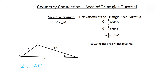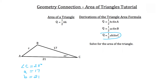And side length B has a measure of 21 units. So which derivation of the triangle area formula do you think we're going to use? Well, we're going to use this one right here because we know side lengths a and B and sine of C.